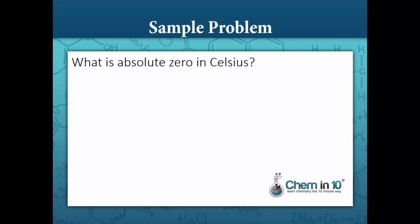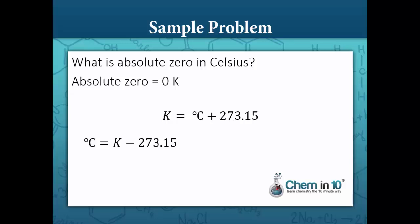What is absolute zero in Celsius? Remember that absolute zero is zero Kelvin. Our equation is Kelvin equals degrees Celsius plus 273.15. To solve for degrees Celsius, subtract 273.15 from each side, giving degrees Celsius equals Kelvin minus 273.15. So zero Kelvin minus 273.15 equals negative 273.15 degrees Celsius.